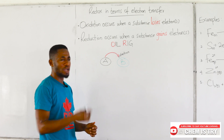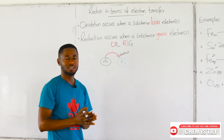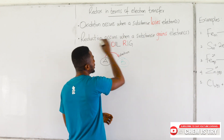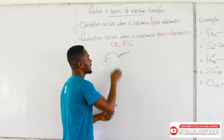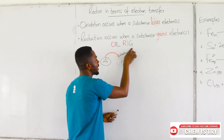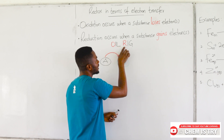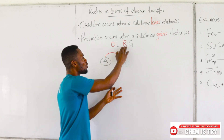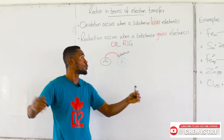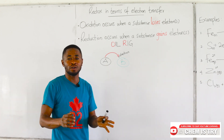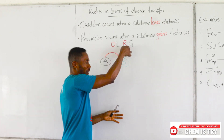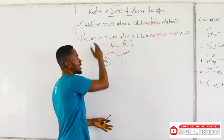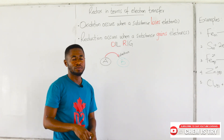Way back in school we had a way of memorizing this — OIL RIG. Oxidation is loss, reduction is gain of electrons. We all know what a rig is — the big structures that people who mine for oil use. So OIL RIG. I hope that will help you memorize what oxidation and reduction are in terms of electron transfer.